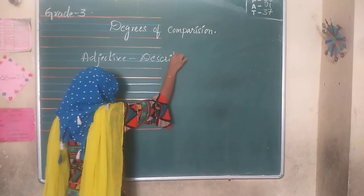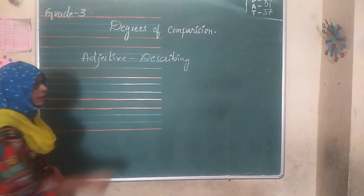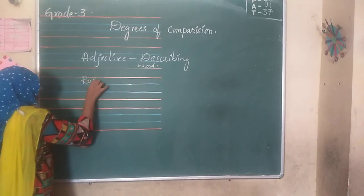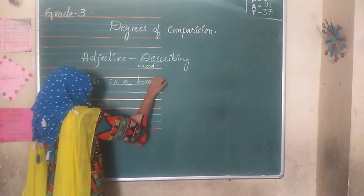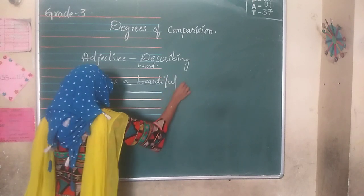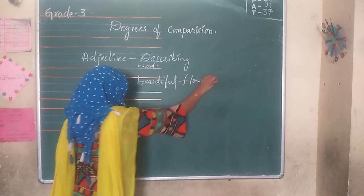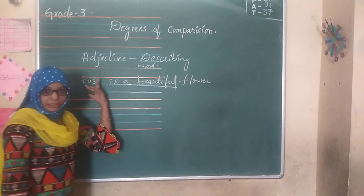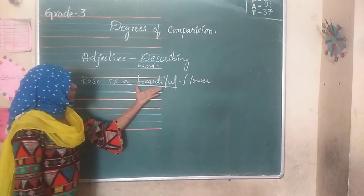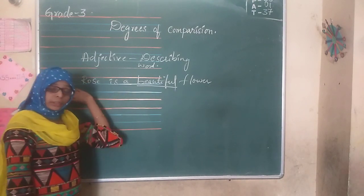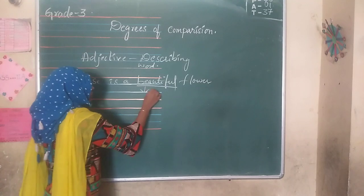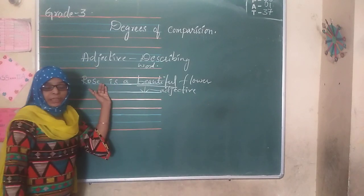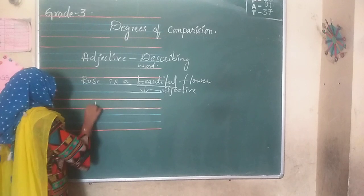For example: 'Rose is a beautiful flower.' Here we are talking about a flower — that is rose. Rose is a noun, and the word 'beautiful' is describing this rose. The word beautiful is saying something about this rose, so 'beautiful' is called an adjective. It is the word which is describing rose.